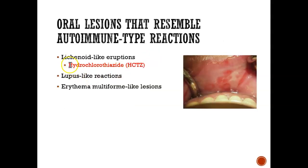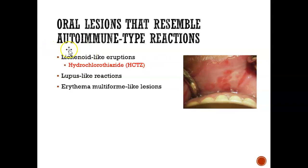This medication here is called hydrochlorothiazide, also known as HCTZ. Just know that if someone is taking this medication, it can cause some lesions — in particular, it can cause lichen planus or lichen planus-type lesions. So you can get lichen planus-type lesions with HCTZ medication.